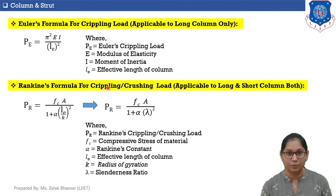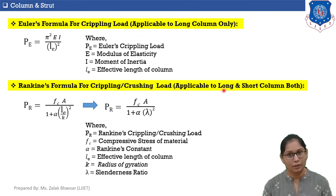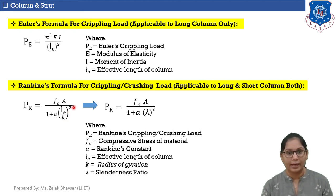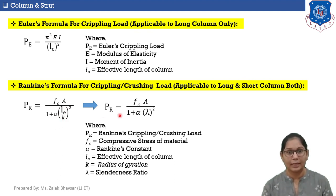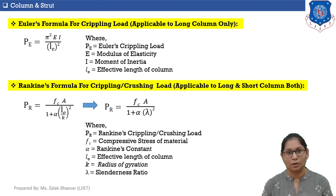Rankine's formula was invented by scientist Rankine and is used to calculate crippling or crushing load. It is applicable for both long and short columns. The formula is: P_R equals f_c times A divided by (1 + alpha times (L_E / k) squared). Since L_E / k is slenderness ratio lambda, this becomes P_R equals f_c times A divided by (1 + alpha times lambda squared). These formulas will be discussed in more detail in the next sessions, along with numerical problems.